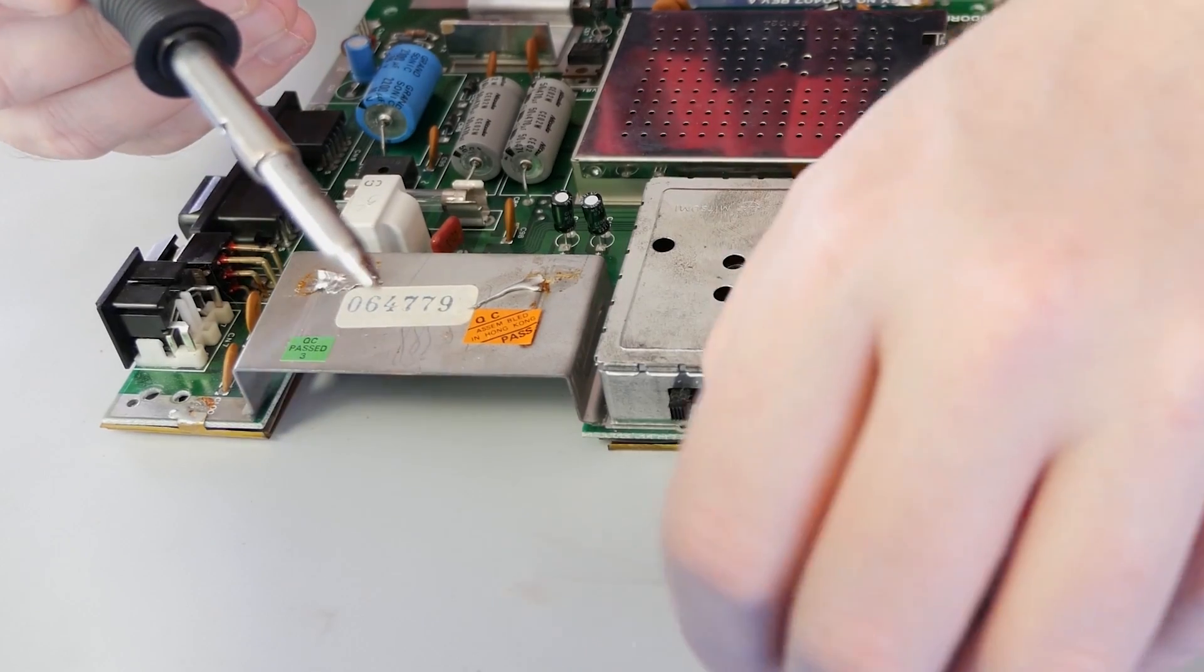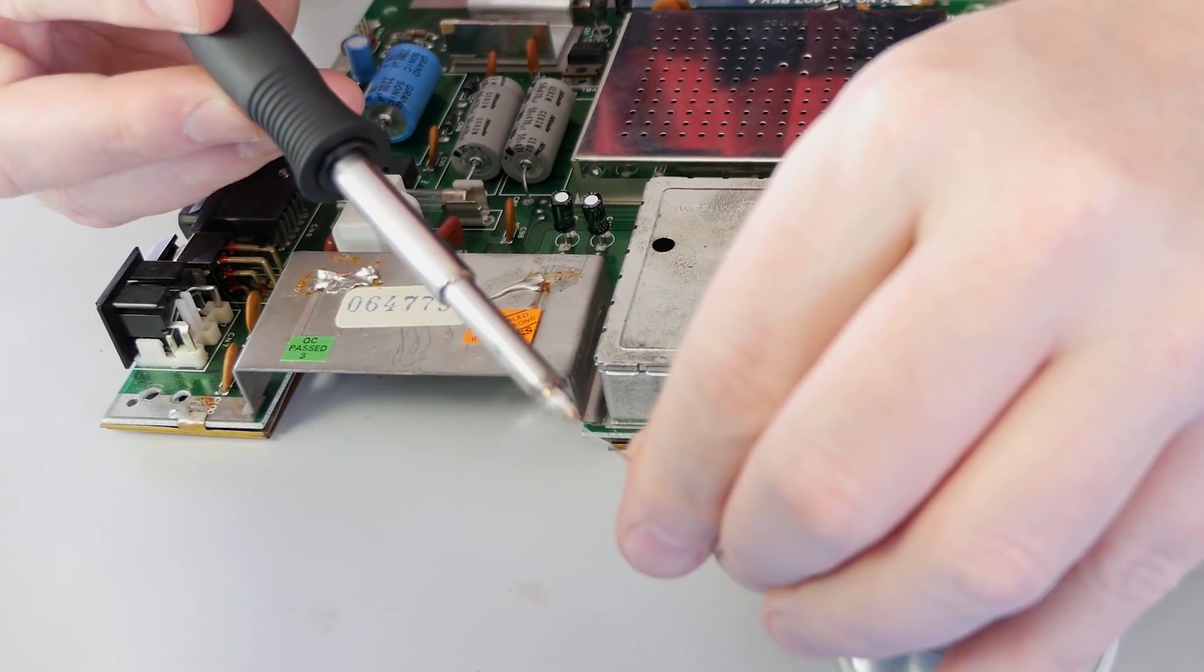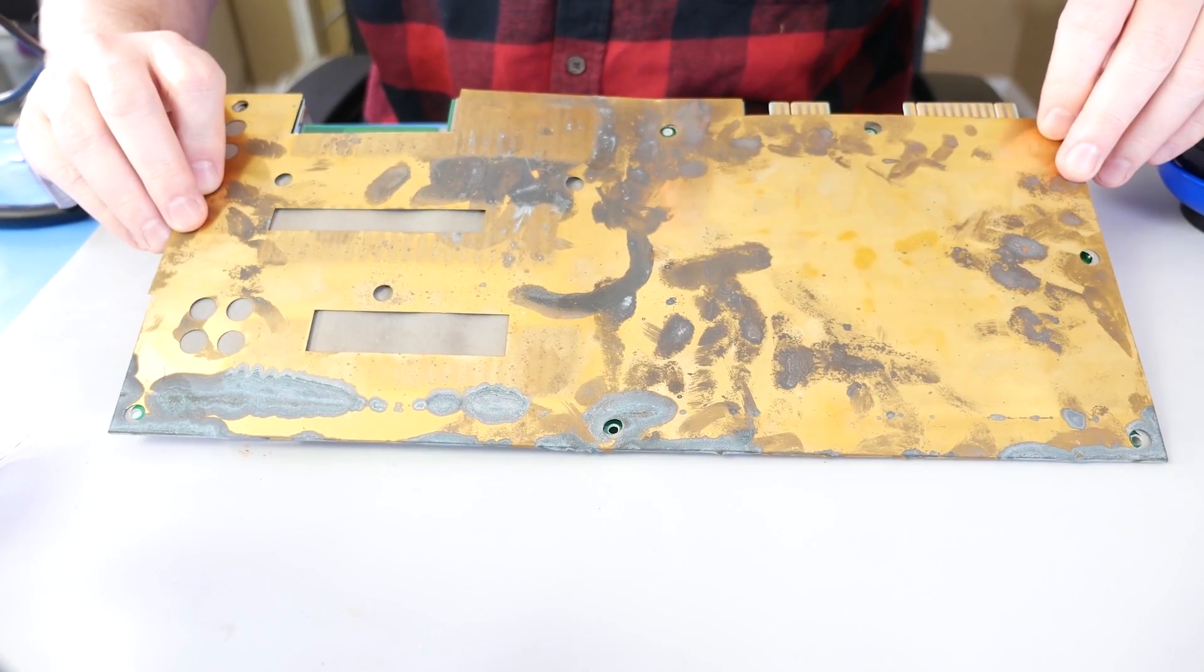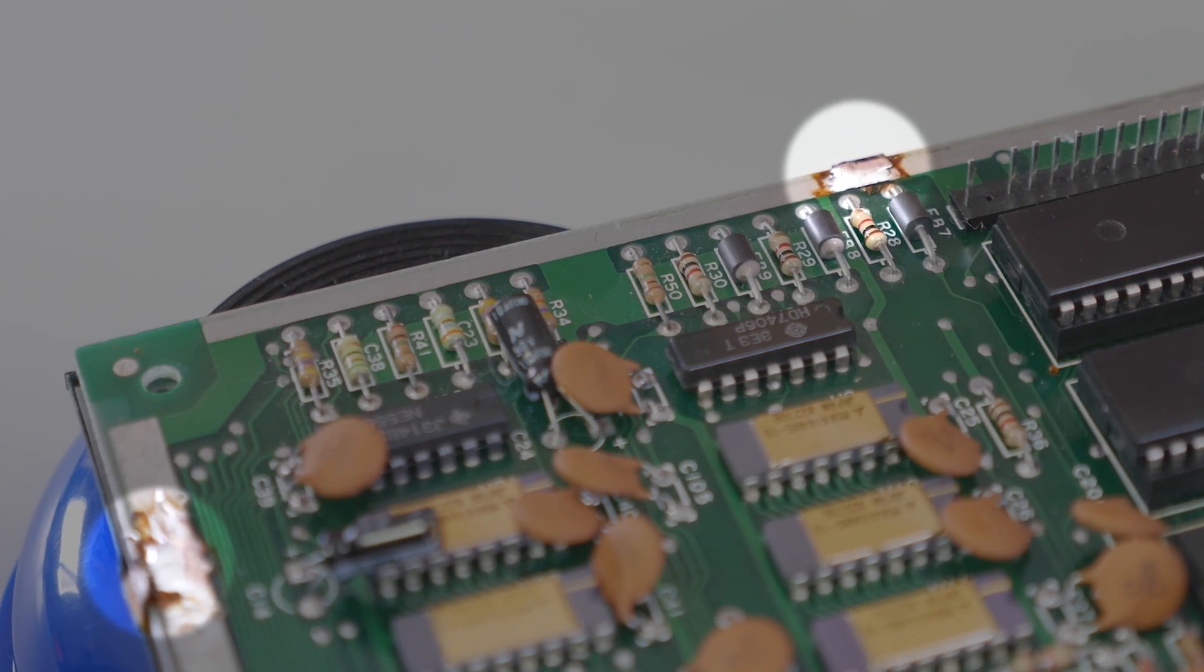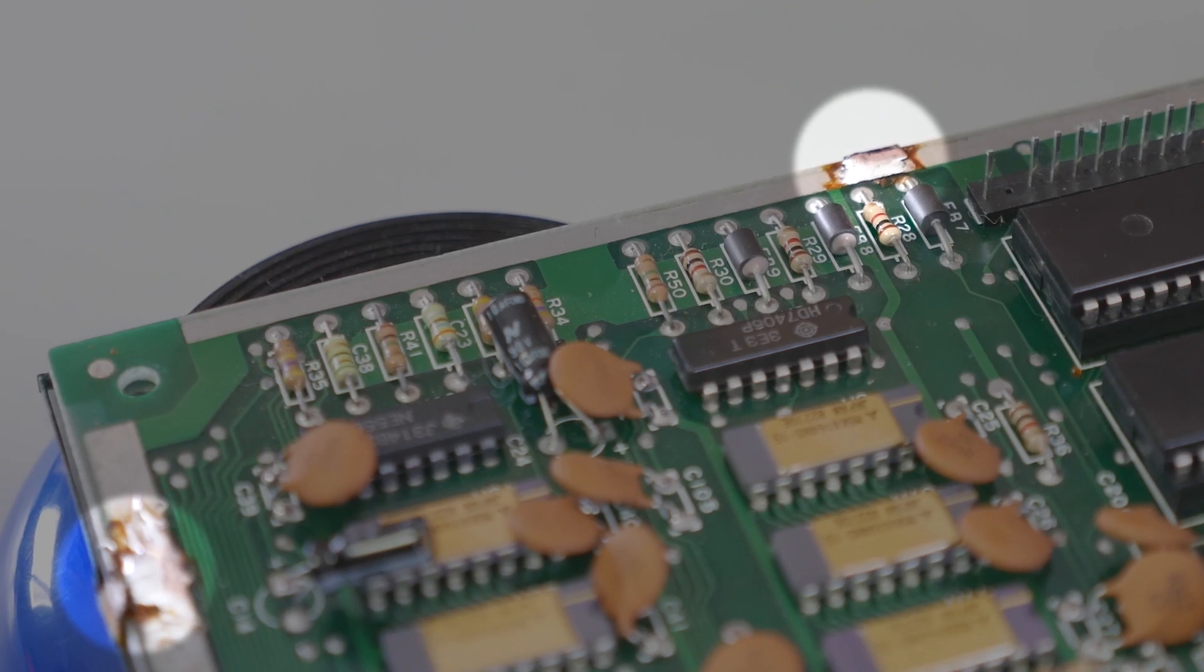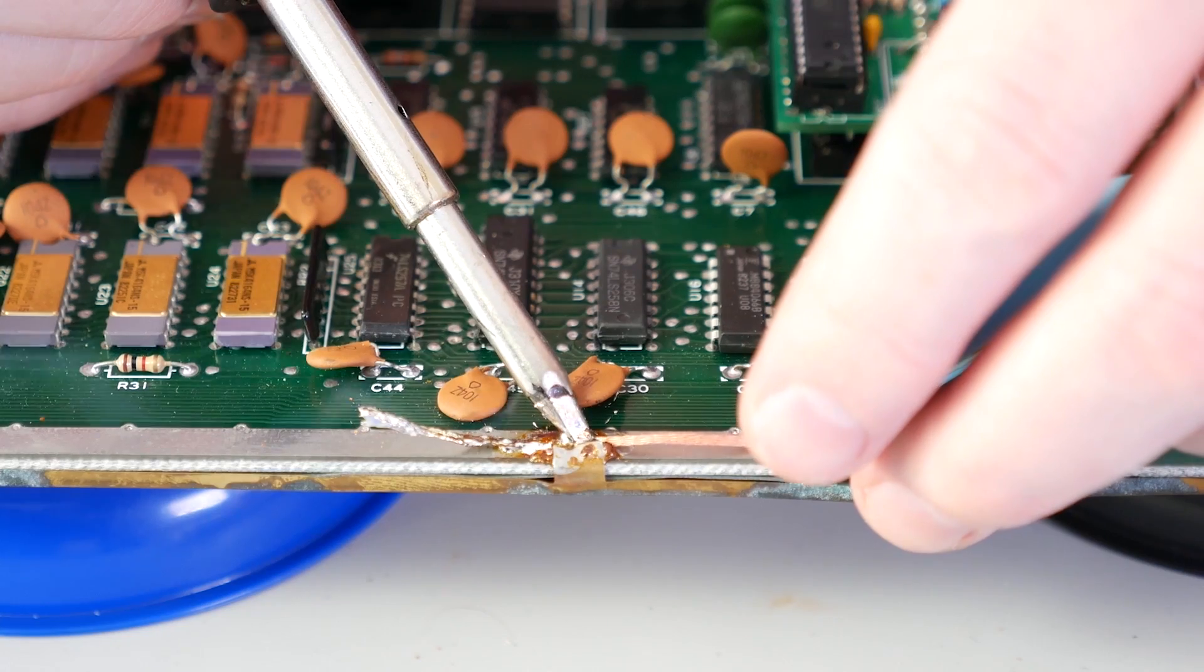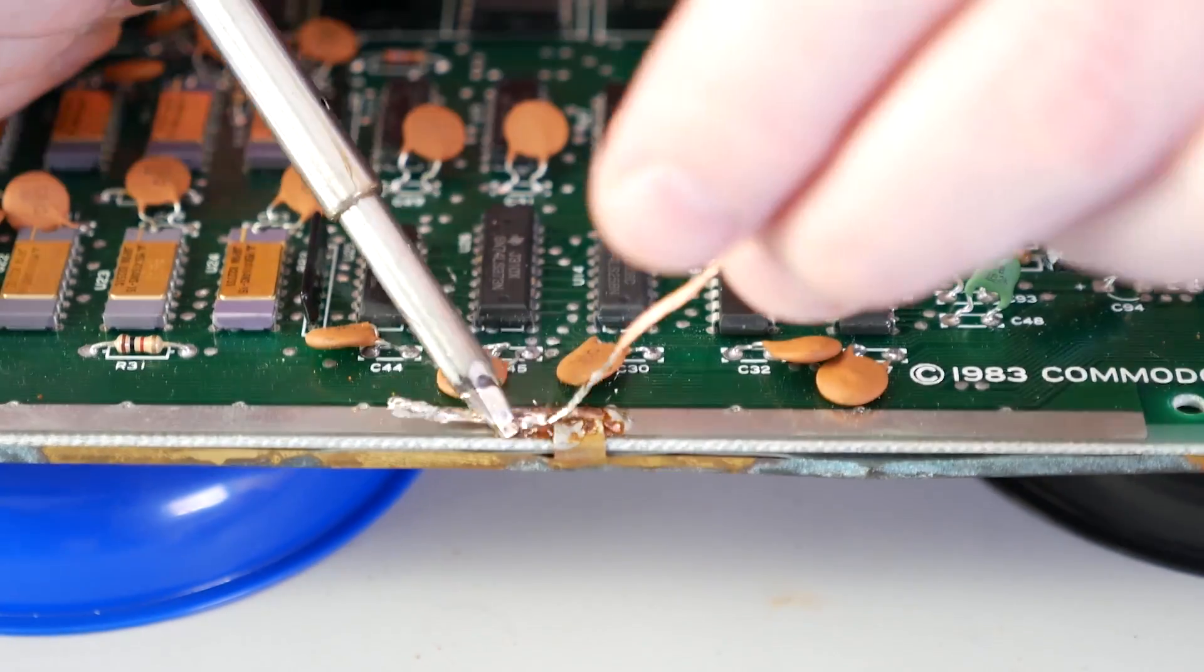Before getting started, of course I tinned my new soldering tip to make sure it was ready for use. Previously, I removed the logic board from the C64 case. As you can see, there is an EMI shield attached to these tabs. Using the Weller 120W soldering iron and American Beauty solder wick, I removed some of the solder blobs and bent the tabs out of place.